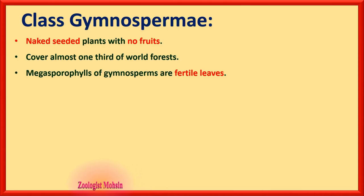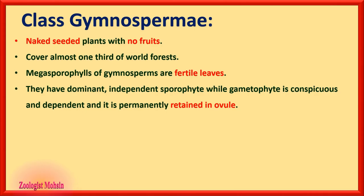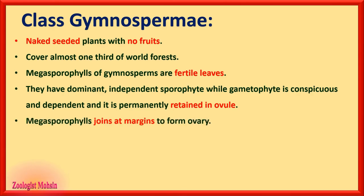Megasporophylls of gymnosperms are fertile leaves — fertile leaves are those which can produce the next generation. Gymnosperms have a dominant independent sporophyte, while the gametophyte is conspicuous and dependent. The plant body of the gymnosperm is basically a sporophyte, while the gametophyte is always retained in the ovule.